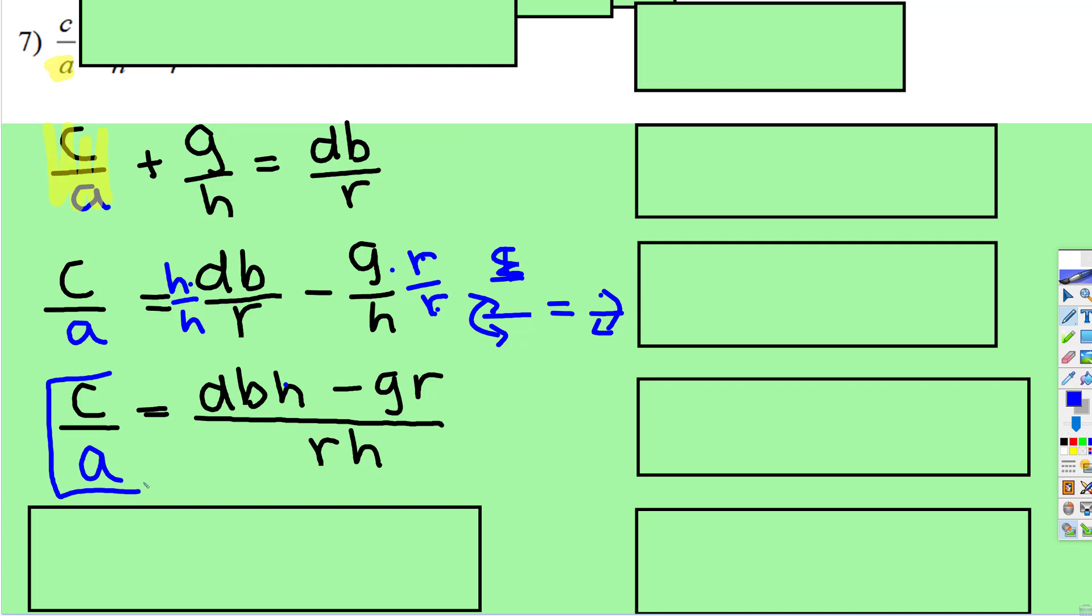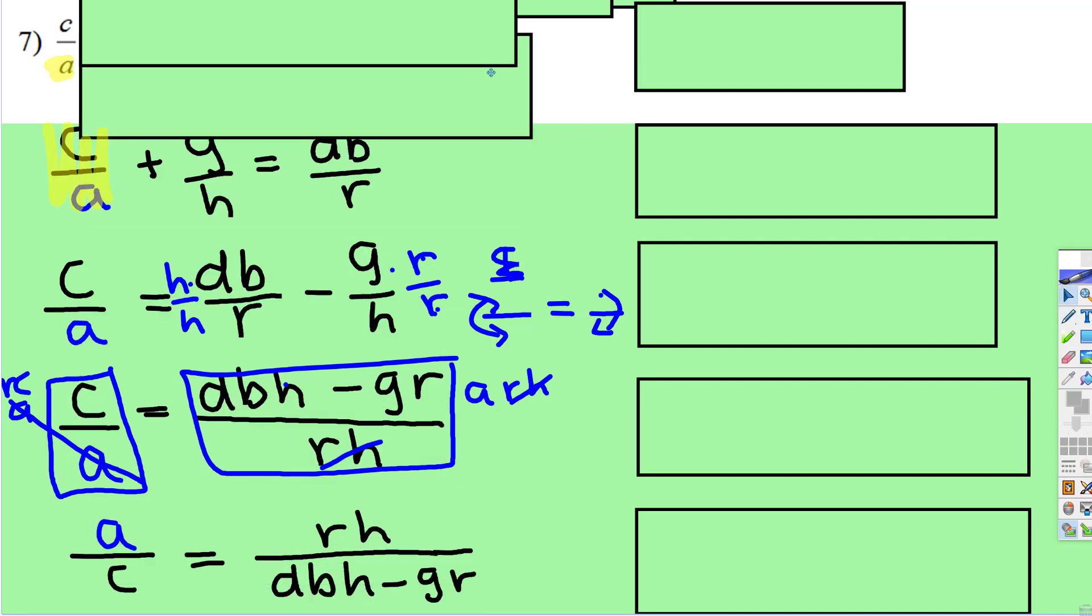Okay, now we have a fraction equal to a fraction. So you can multiply by the diagonal, you can multiply both things by a and then multiply both sides by rh. But one way to think about that is if you flip both sides, you get the same result without showing the algebra.